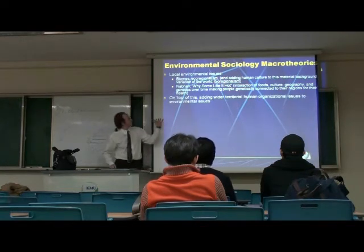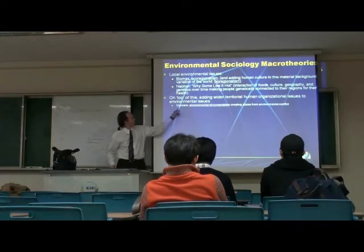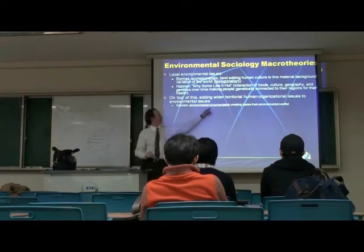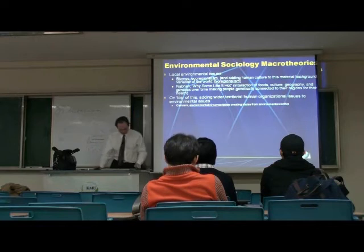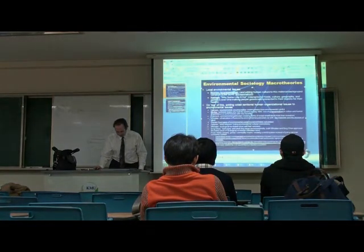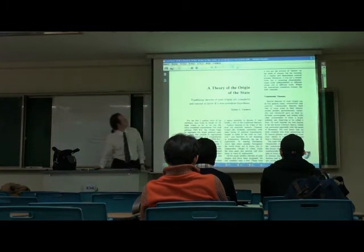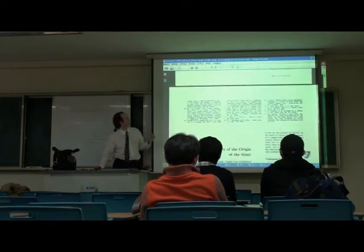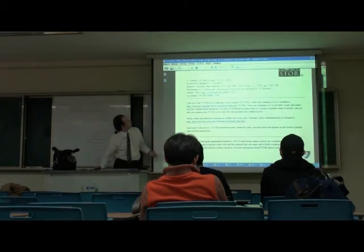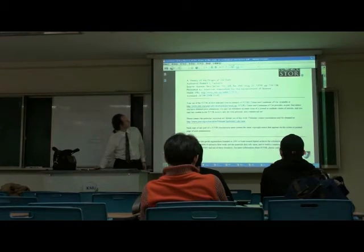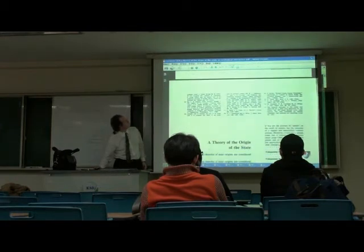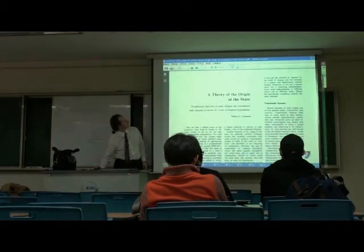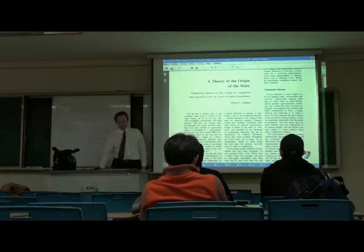On top of this, let's add a wider territorial organization. The term is Carniero's environmental circumscription. He has a theory of the origin of the state connected to the environment. This was published in 1970 — a very short article, seven pages, but interesting for environmental sociology.